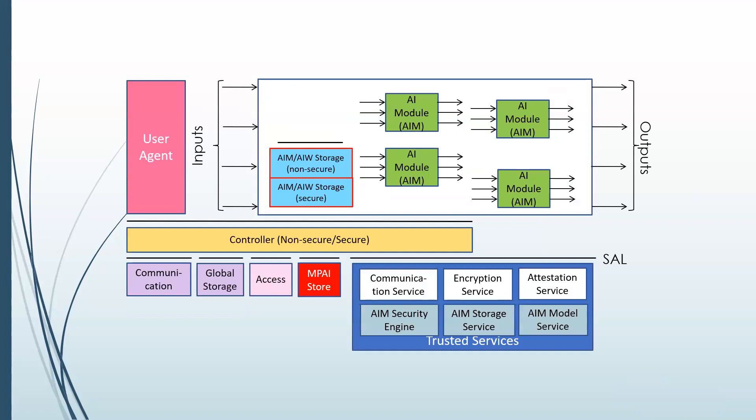What we are doing in this area — and this is one of the standards we plan to publish at the end of September — is an extension. So far, we assumed that the AIF was secure, but now we are providing the first means to support security of the environment and execution. You see communication services, encryption services, and attestation services. These are the three APIs that we are adding to the specification.